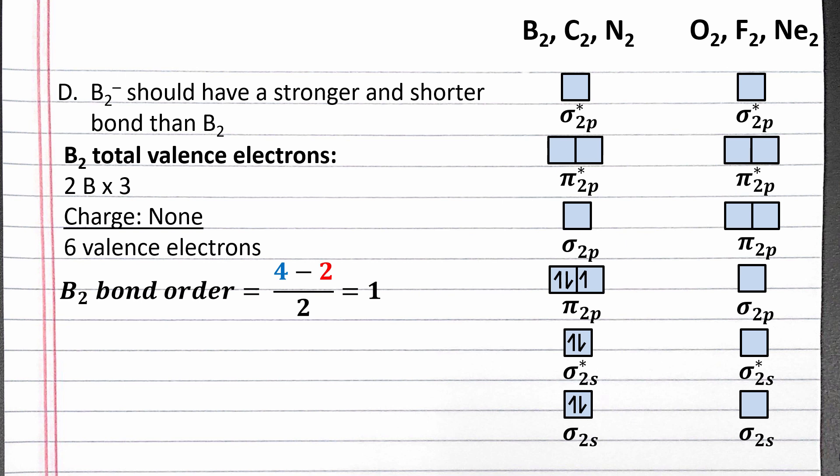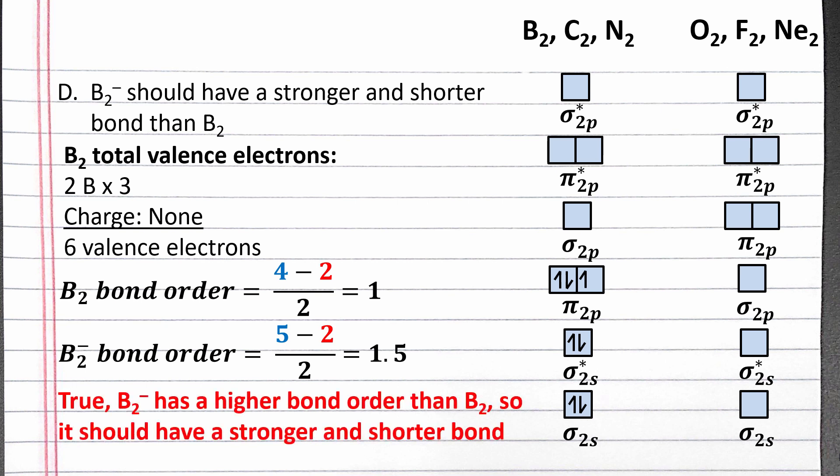To calculate bond order for B₂⁻, we now have 5 electrons in bonding molecular orbitals and still have 2 electrons in antibonding molecular orbitals, so the bond order is now 1.5. Since B₂⁻ has a larger bond order than B₂, it should have a stronger and shorter bond. Our fourth statement is true.